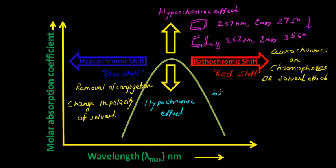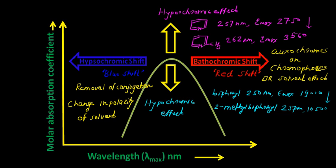Let's say if we have biphenyl. Generally biphenyl absorbs around 250 nanometer with epsilon max 19000. And if we put one methyl group into this biphenyl, this will become 2-methylbiphenyl. And this 2-methylbiphenyl will absorb around 236 nanometer, and this molar absorption coefficient decreased from 19000 to 10500. Such type of decrease in intensity is known as the hypochromic effect.